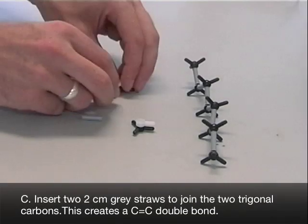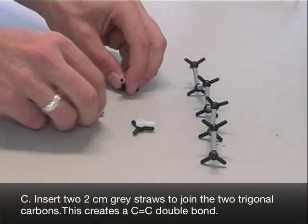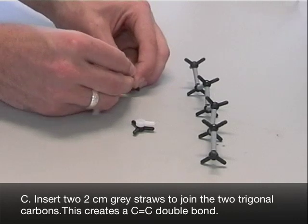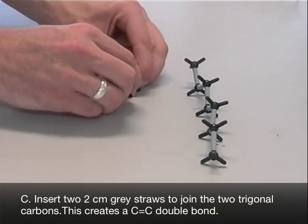Insert two two centimeter grey straws joining the two trigonal carbons along the direction of the translucent pegs. This creates a carbon-carbon double bond.